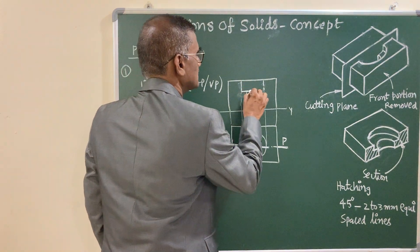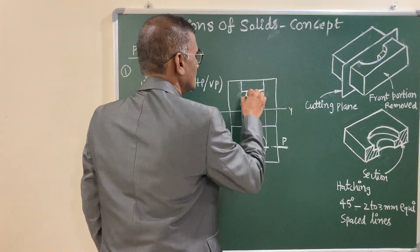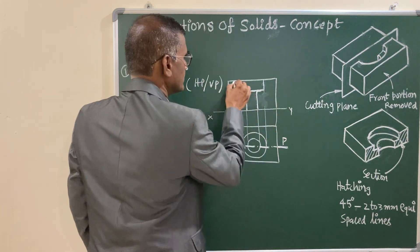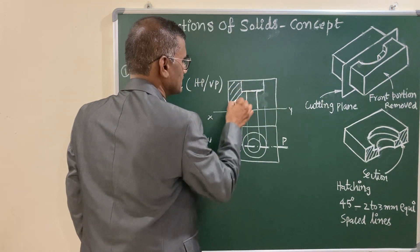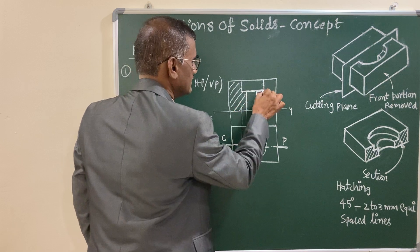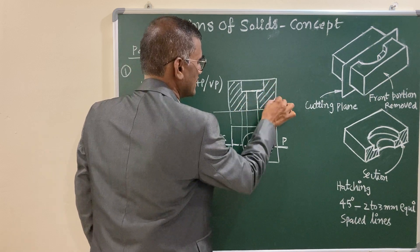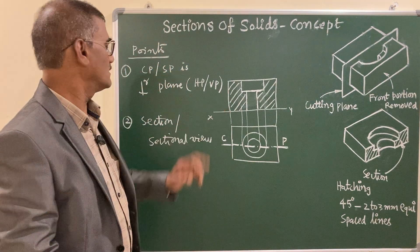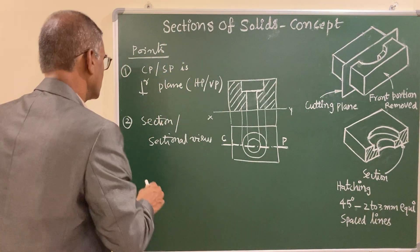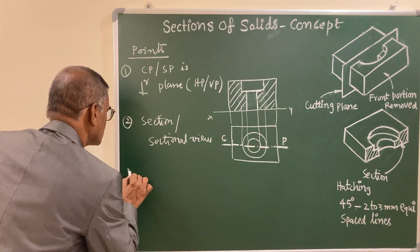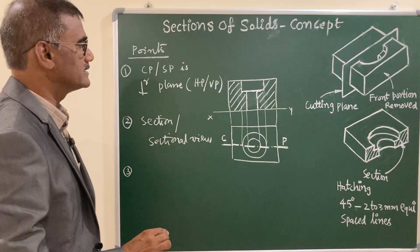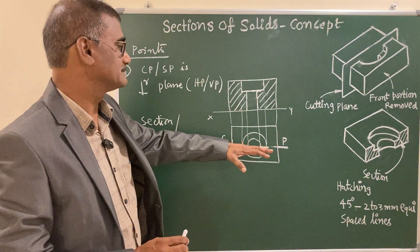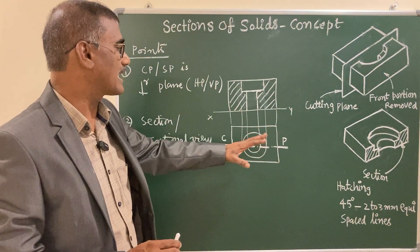Now it becomes continuous lines and you indicate this with hatching - 45-degree lines - maintaining equispaced lines, usually 2 mm apart. This is your section or sectional view. The third point to remember is the true shape of the section. Whenever the cutting plane or section plane is inclined, you cannot see the true shape of the section in the projected view.